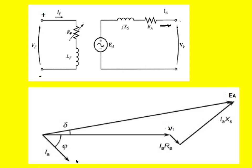IA is in one direction and perpendicular to it is the IA·XS drop. When we add VT, IA·RA, and IA·XS vectorially, we get the resultant voltage — the induced voltage per phase in the stator winding — given by EA. The angle between the terminal voltage and the induced voltage in the generator is called delta, whereas the angle between the terminal voltage and the armature current is called phi.